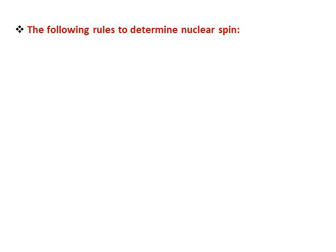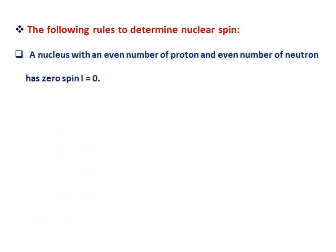The following rules determine nuclear spin. First rule: a nucleus with an even number of protons and an even number of neutrons has an I value of zero. Examples include carbon, oxygen, helium, and sulfur. In carbon-12, the number of protons is 6 and the number of neutrons is 6 — even protons and even neutrons — therefore I equals zero.